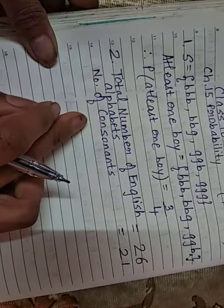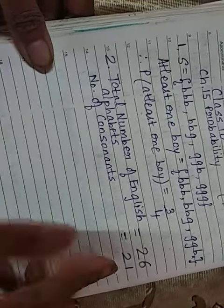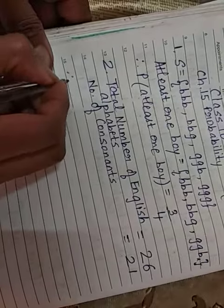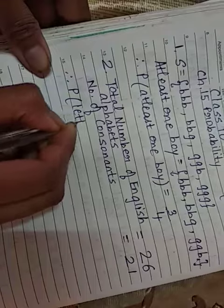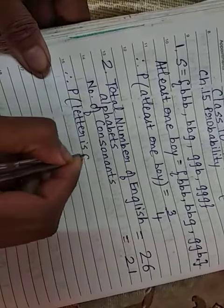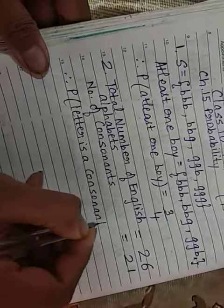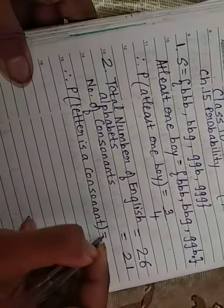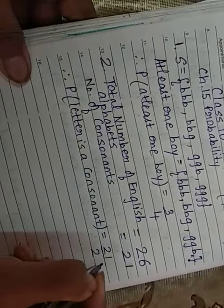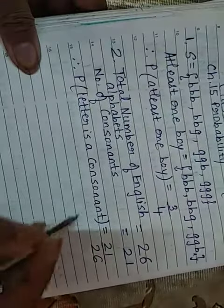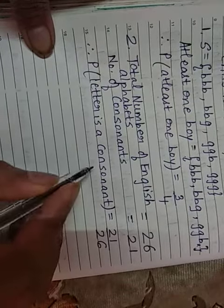Now, here the question is not of vowels. Since we will not write vowels. So, the consonants are 21. Now, they are asking us the probability that the chosen letter is a consonant. So, how much is the probability? See, 21 divided by 26 is the answer. That is, this is the probability that the letter is a consonant.